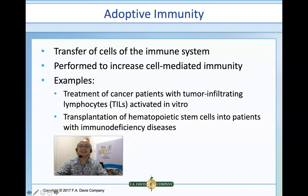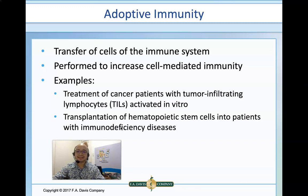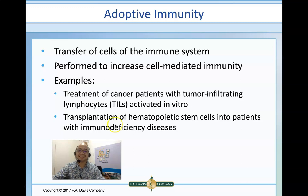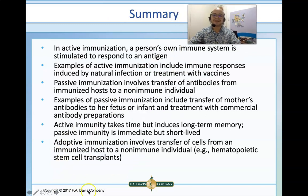Adoptive immunity involves the transfer of cells of the immune system to increase cell-mediated immunity. It is used for treatment of cancer patients with tumor-infiltrating lymphocytes activated in vitro, and for transplantation of hematopoietic stem cells into patients with immunodeficiency. This concludes the summary of our lesson on immunization and vaccines.